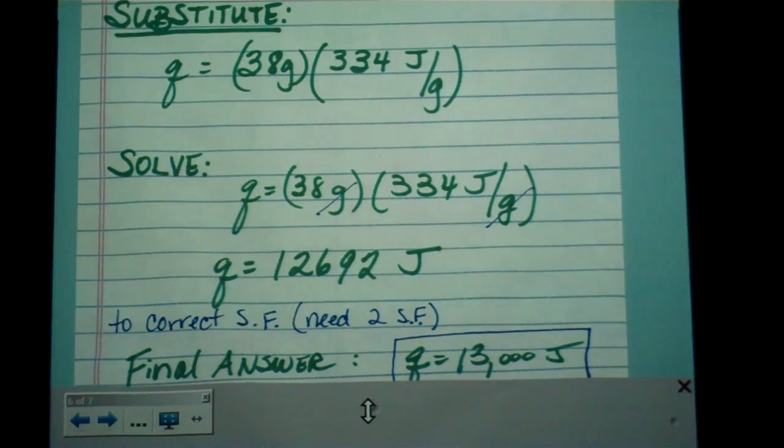However, quite often they'll make you put those values, that value into kilojoules. So you have to change that by dividing by 1,000 joules to kilojoules. You divide by 1,000. So the Q value will end up being 13 kilojoules.